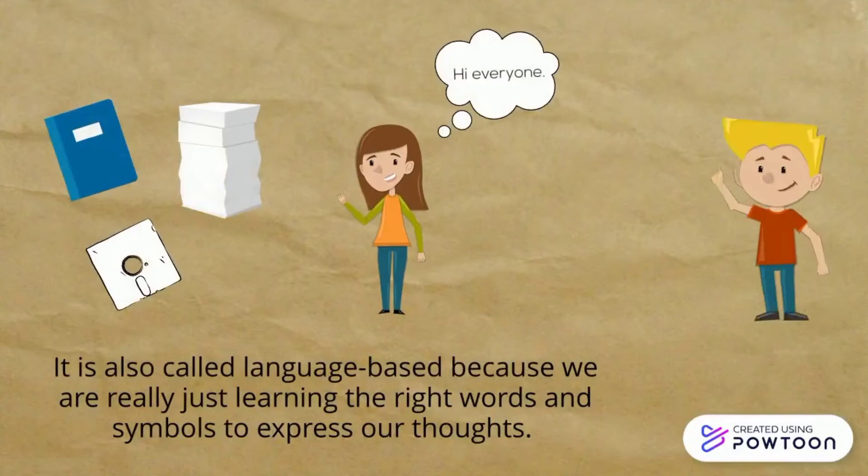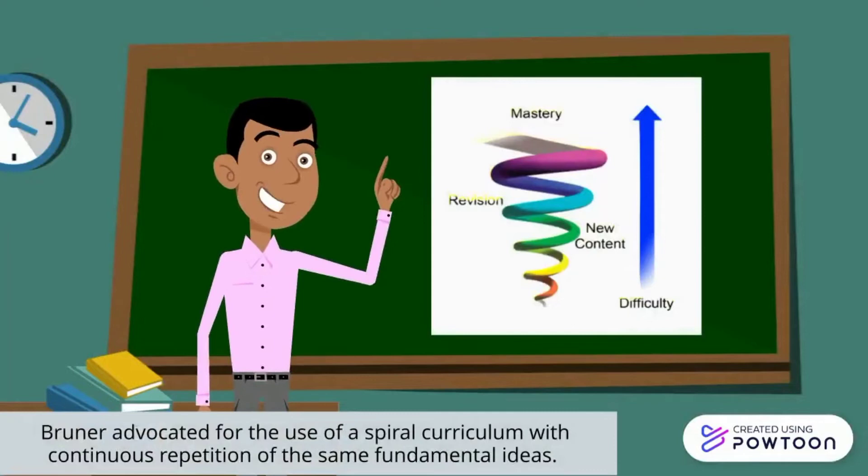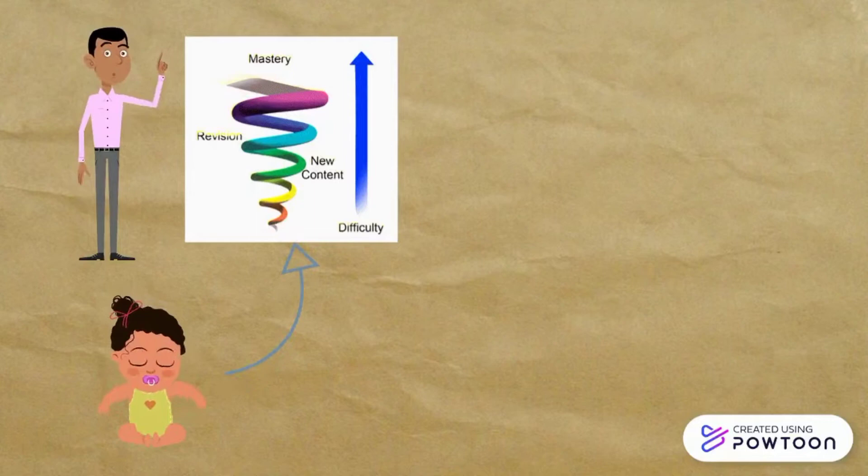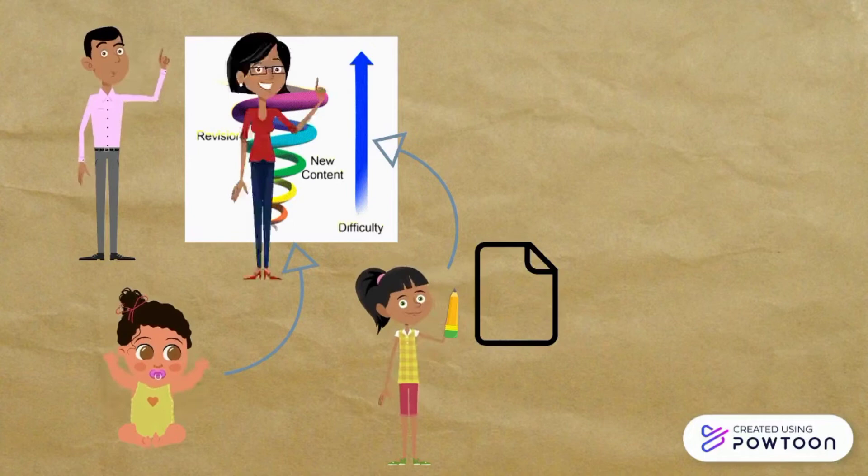Bruner advocated for the use of a spiral curriculum with continuous repetition of the same fundamental ideas. The curriculum is comprised of three characteristics. First, students revisit the same topic at regular intervals. Second, the complexity of the topic increases with each revisit. Third, the new learning has a relationship with previous learning.